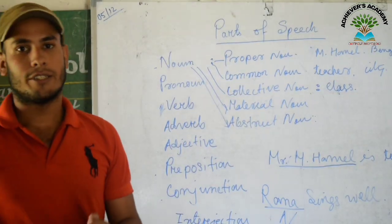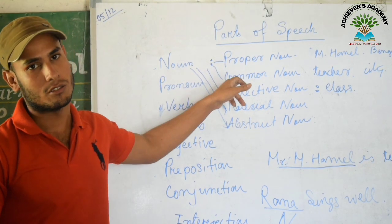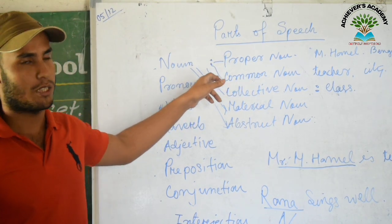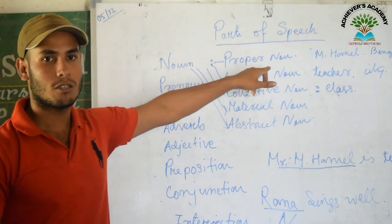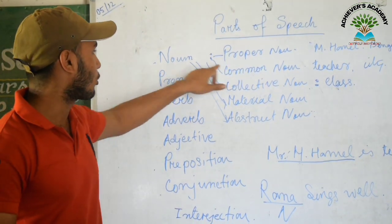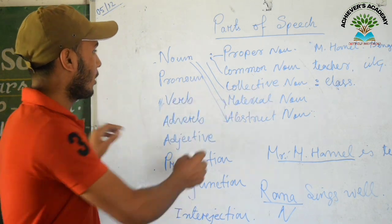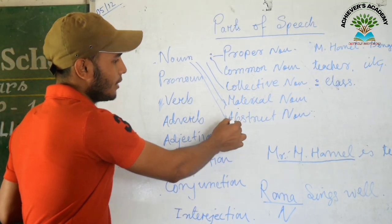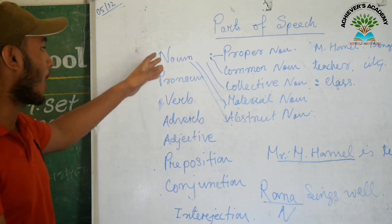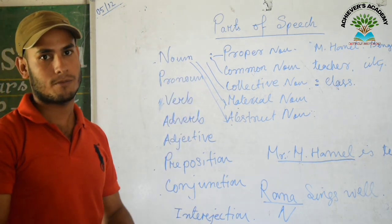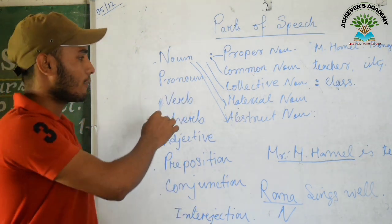There are five types of noun: the proper noun, the common noun, the collective noun, the material noun, and the abstract noun. These are all names — these are the types, or classes, of nouns.